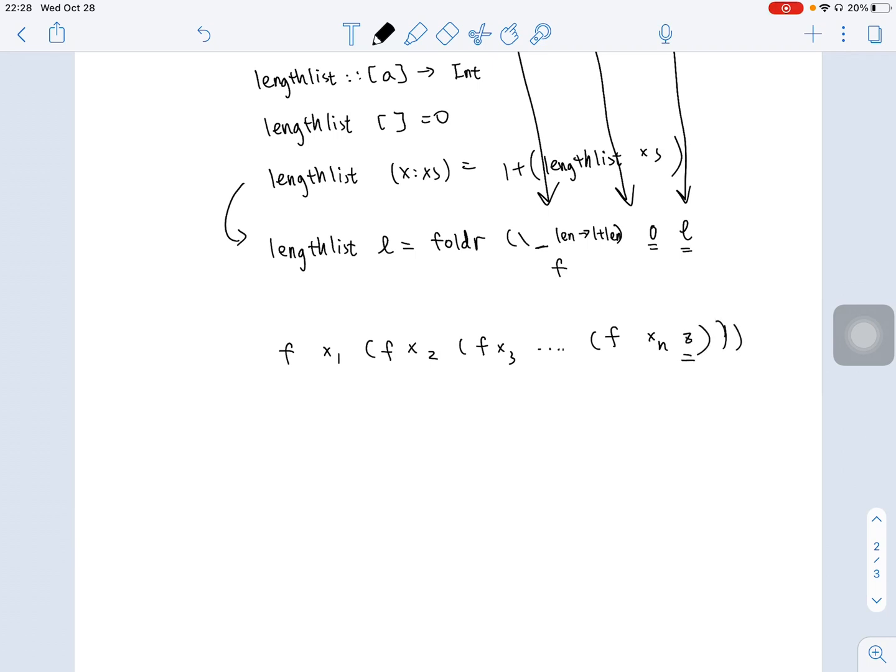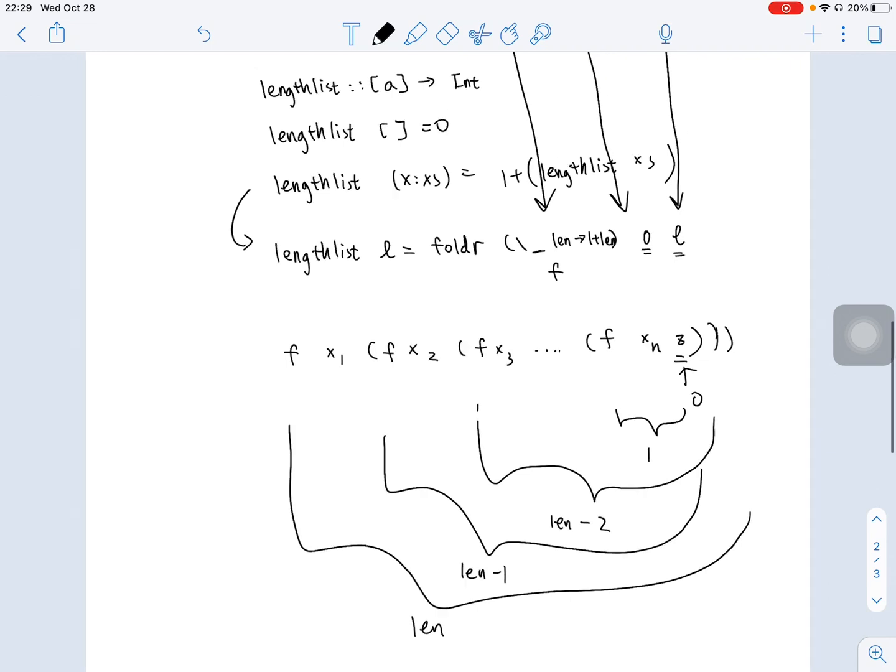This z is the initial value, which is 0. xn, whatever, we don't care. So, here, this would give us 1, and this would give us 1, and this would give us 1, and this would give us 1.